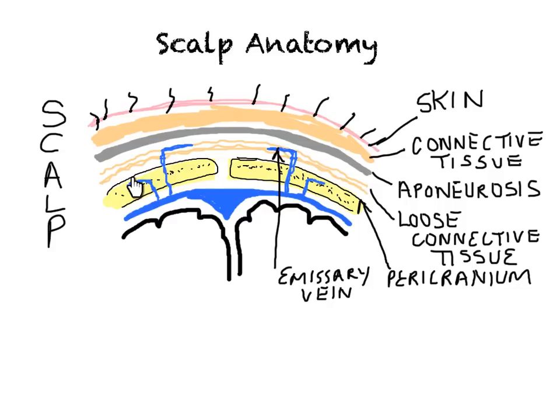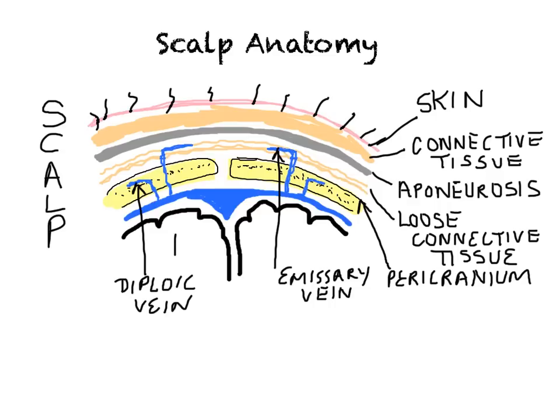The diploic veins drain blood from the skull bones into the superior sagittal sinus. And finally, we have the brain.